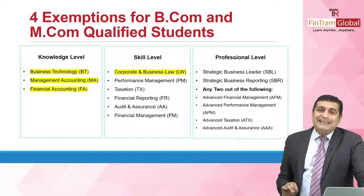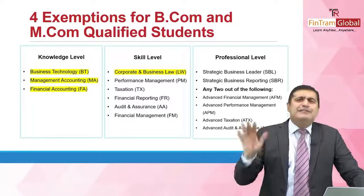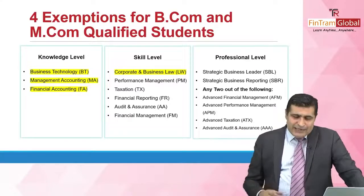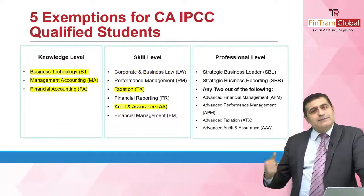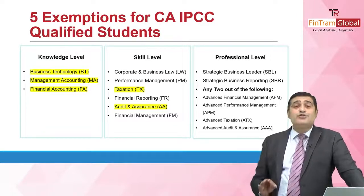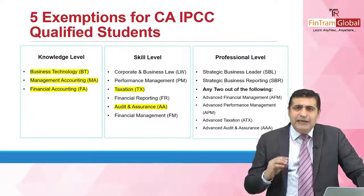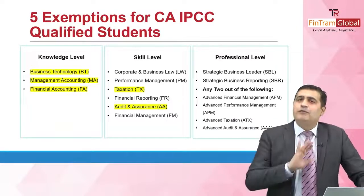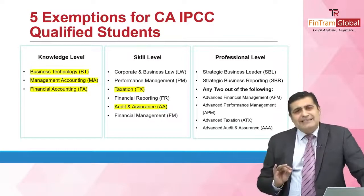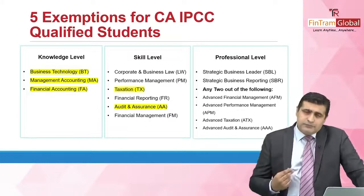So those are the BCom exemptions. Now if you have done your CA IPCC, you are at the Skill Level — and because you cleared IPCC, Taxation is also exempt for you. So from the remaining Skill Level papers, you choose what's left, prepare, and move ahead. ACCA duly recognizes what you have achieved from your qualification standpoint and gives you exemptions accordingly — because they feel you have already studied and cleared those papers, and they appreciate that.